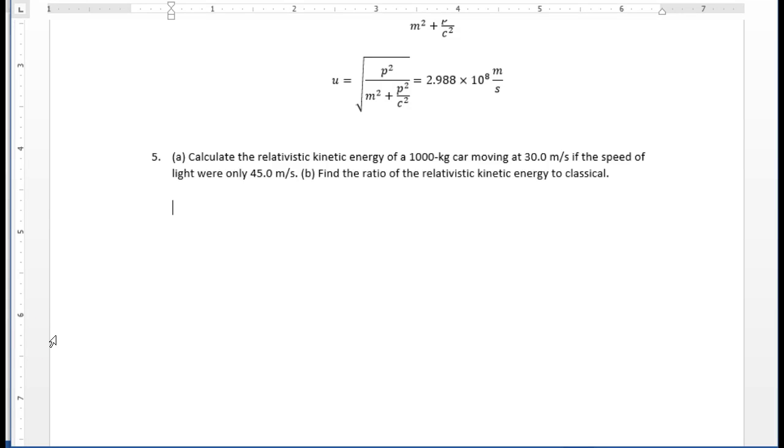Problem 5 of homework 9. Calculate the relativistic kinetic energy of a 1000 kilogram car moving at 30 meters per second if the speed of light were only 45 meters per second.